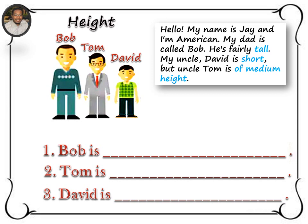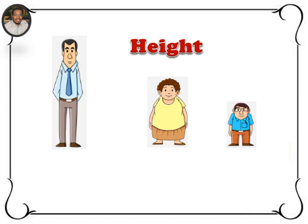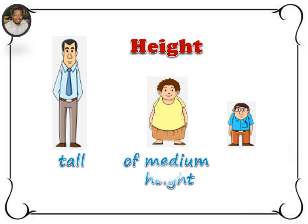Have you finished? Let's do it together. Number one: Bob is tall. He's fairly tall. Number two: Tom is of medium height. And finally, David is short. Excellent job, well done! Height: tall, of medium height, short.